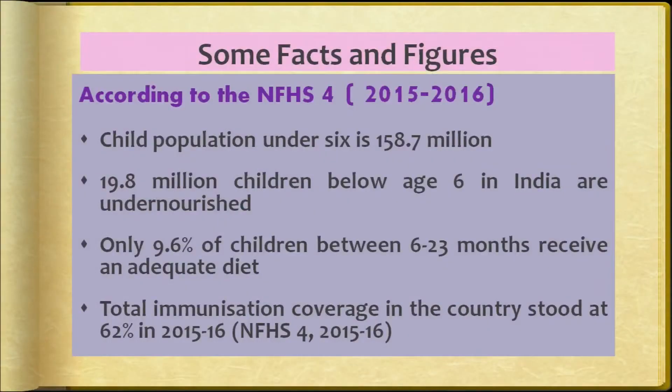We will now understand how deprivation, deficit, and limited resources impact growth. Let us study the situation of children in India. There is a lot of disparity — some people live in small homes, some in big homes, some in congested areas, some in open spaces — reflecting significant economic variation. According to the National Family and Health Survey (NFHS-4), the child population under 6 is 158.7 million, and 19.8 million children below age 6 in India are undernourished.